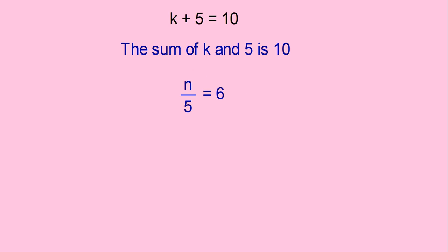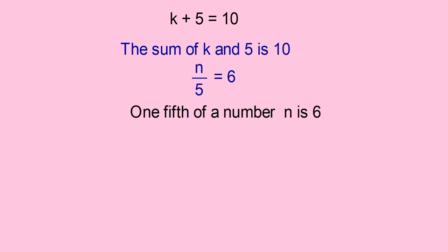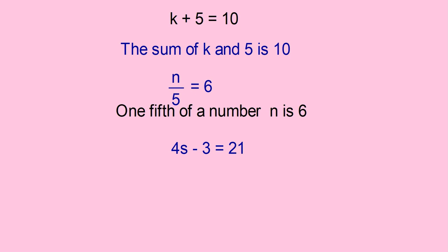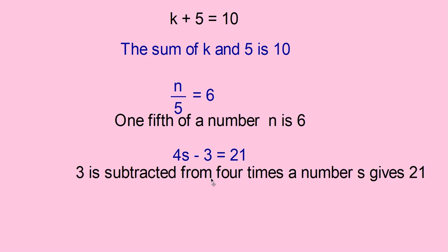Let me take another equation: N by 5 is equal to 6. N by 5 means 1 fifth of N, so you can write it as: 1 fifth of number N is 6. Another equation: 4s minus 3 is equal to 21. 4s means 4 times S, and 3 is subtracted from it, so you can write: 3 is subtracted from 4 times number S gives 21.